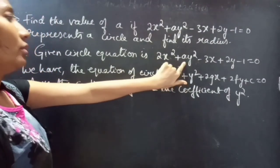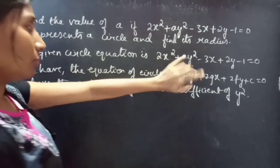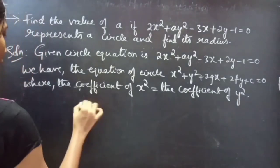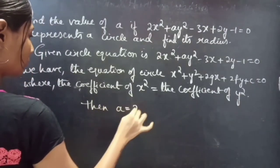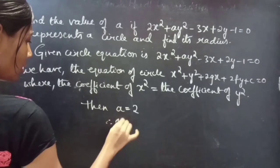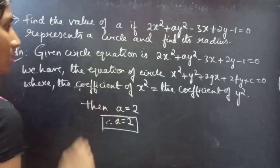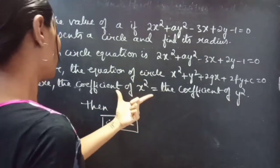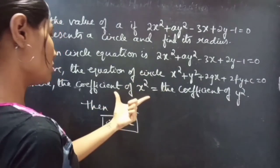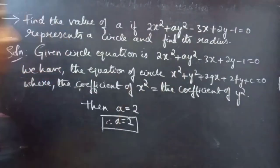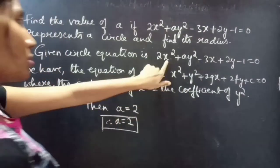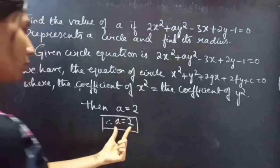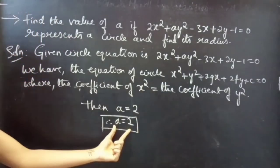Using this condition, by comparing the given circle equation with the general form, we will get A equals 2. Therefore, A equals 2. The coefficient of x squared is 2 and the coefficient of y squared is A, so these two must be equal, giving A equals 2.